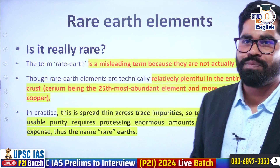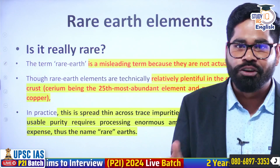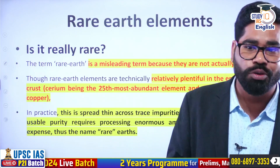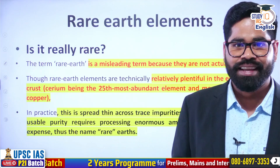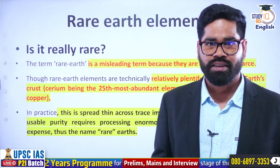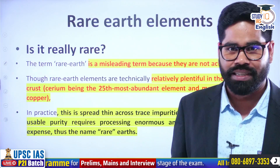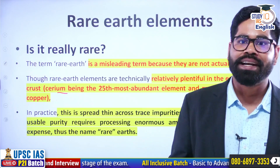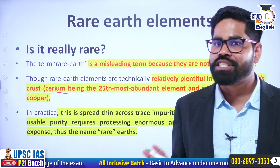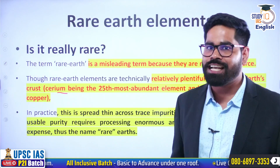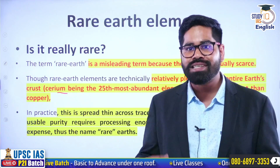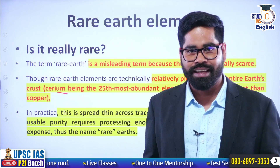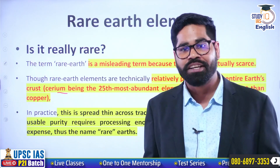Are these 17 rare earth elements really rare? Are they not found on the surface? The answer is no. The term 'rare earth element' is a misleading term — a misnomer — because they are not rare. They are relatively plentiful on the surface of the earth. In the earth's crust, there is a plentiful amount of these elements. In fact, cerium is the 25th most abundant element in the earth's crust. So why have they been called rare? Because their extraction method is quite difficult — it is quite difficult to extract them in a profitable manner.